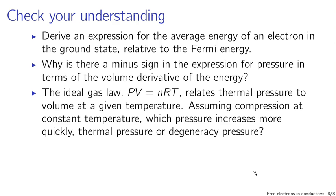At any rate, this behavior of a free electron gas does give us a reasonable picture for the behavior of solids. To check your understanding, derive an expression for the average energy of an electron in the ground state relative to the Fermi energy. Also consider: why was there a minus sign in the expression for pressure as a derivative of energy with respect to volume? And finally, let's compare the degeneracy pressure to the ideal gas pressure — looking at it from the perspective of the ideal gas law, comparing thermal pressure and degeneracy pressure together.